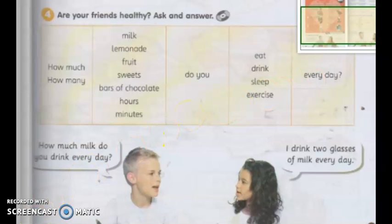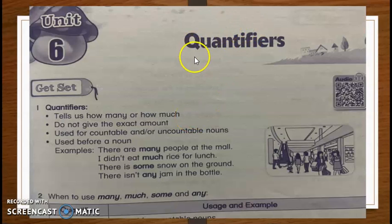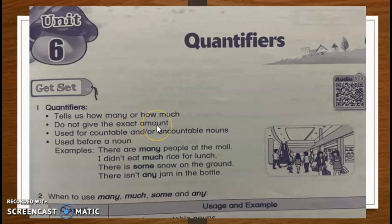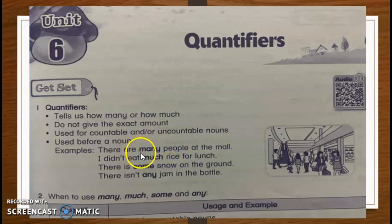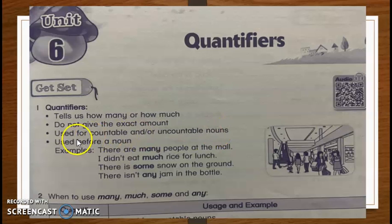So this is quantifiers — they tell us how many or how much. Dia tak bagi exact amount. Quantifiers that can be used are: many, much, some, any. For example, like people at the mall — how many people? You can count: 100 people, 1,000 people, 2,000 people. So the quantifier used is 'many' — there are many people at the mall. Quantifier mesti sebelum noun. Noun means things, people, places.